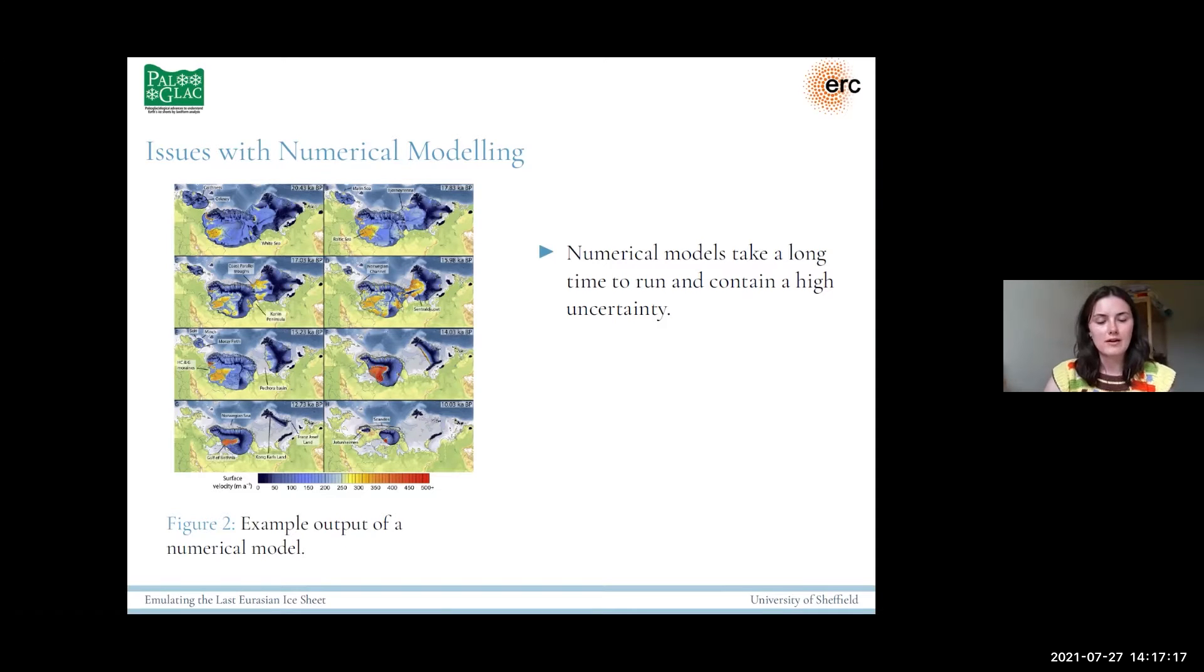So on the left we've got an example of what a model output can look like. This one is an example output of the Eurasian ice sheet over several thousand years and it shows the ice extent and also the surface velocities at those different time points.